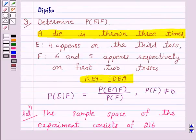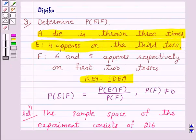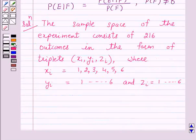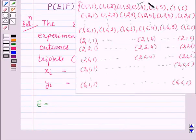Now, we are given E is the event 4 appears on the third toss. So E is the set consisting of elements (1,1,4), (1,2,4), up to (1,6,4); (2,1,4), (2,2,4), up to (2,6,4); (3,1,4), (3,2,4), up to (3,6,4).